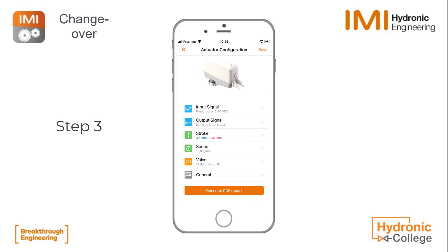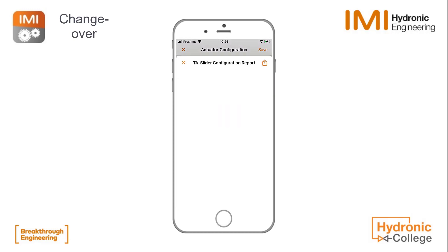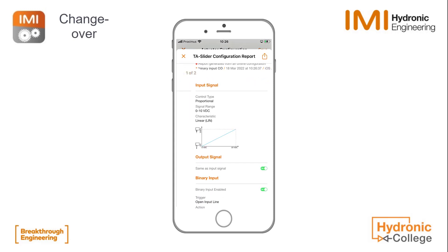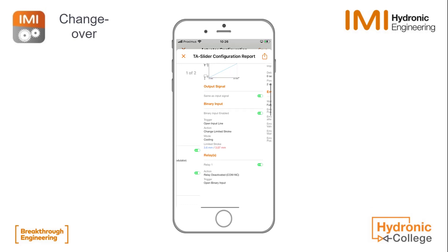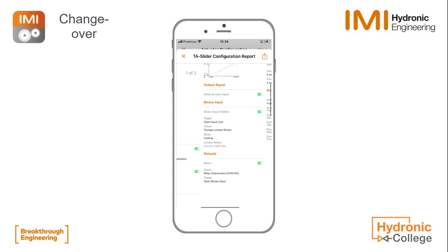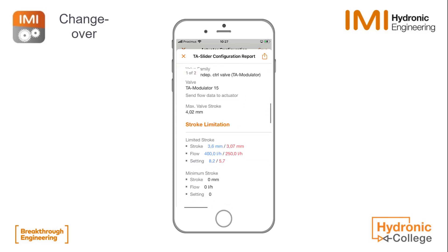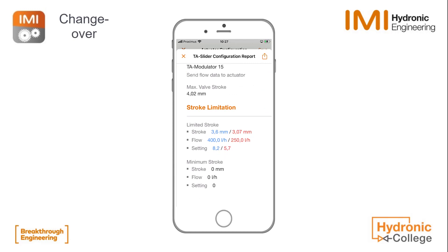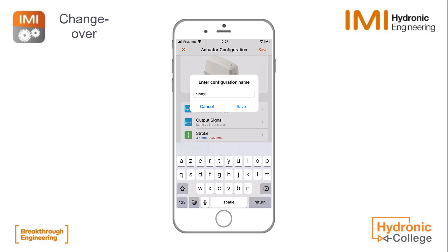You can have an overview of all settings via generate PDF reports. Clicking on generate PDF report gives a full overview of all the parameters set — easier than the configuration file where you need to enter each tab separately. We can see the input signal proportional 0 to 10 volts, the binary input set to change the limited stroke, and the relay set with the open binary input as a trigger. Going down, we can see the flows set: 400 liters and 250 liters. We will save this configuration as 'binary input changeover' — and the configuration is done.